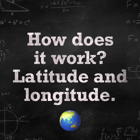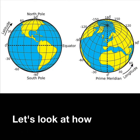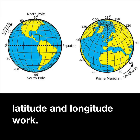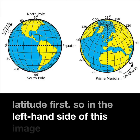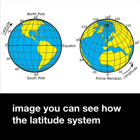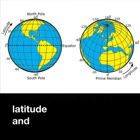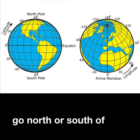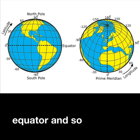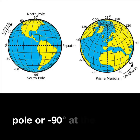How does latitude and longitude work? Let's look at latitude first. On the left-hand side of this image you can see how the latitude system works. It starts at the equator, which is zero degrees of latitude, and increases as you go north or south. It goes up to 90 degrees at the north pole or negative 90 degrees at the south pole.